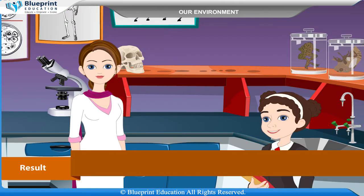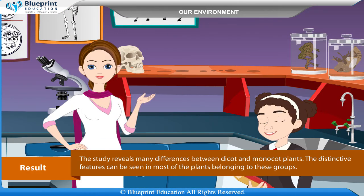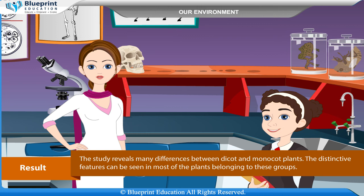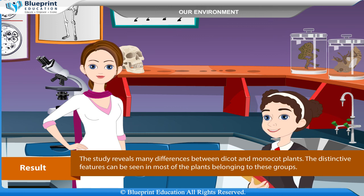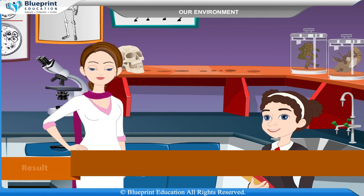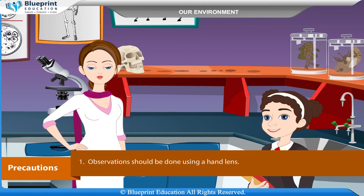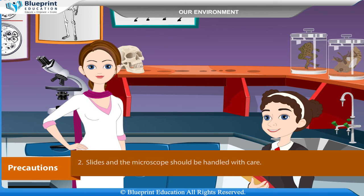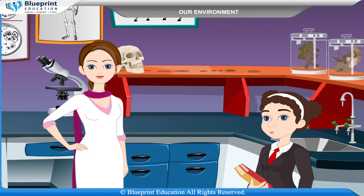Result: The study reveals many differences between dicot and monocot plants. The distinctive features can be seen in most of the plants belonging to these groups. Precautions: Observations should be done using a hand lens. Slides and the microscope should be handled with care. Handle the plant parts carefully to avoid damage. Thank you for this knowledgeable experiment.